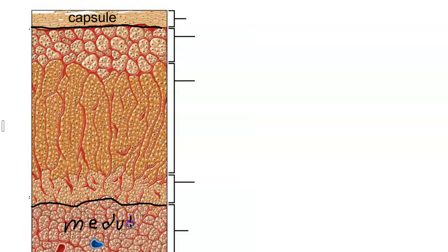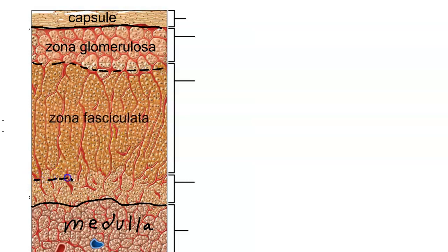Taking a look at the adrenal cortex, the adrenal cortex is made up of three regions. There's the zona glomerulosa, which is the most superficial region; the zona fasciculata, where the cells are arranged in strand-like arrangements; and then the zona reticularis, which is the deepest layer of the adrenal cortex.